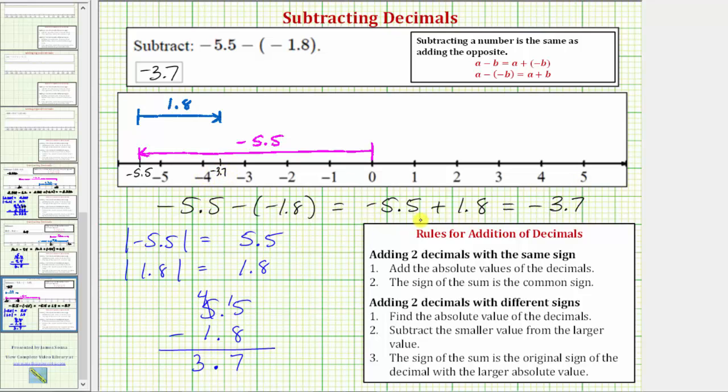So negative 5.5 plus 1.8, which equals negative 5.5 minus negative 1.8, equals negative 3.7. I hope you found this helpful.